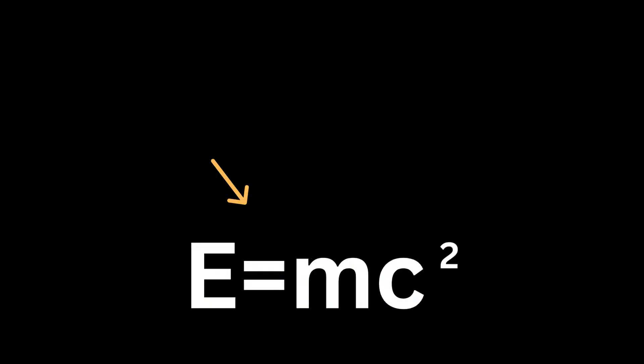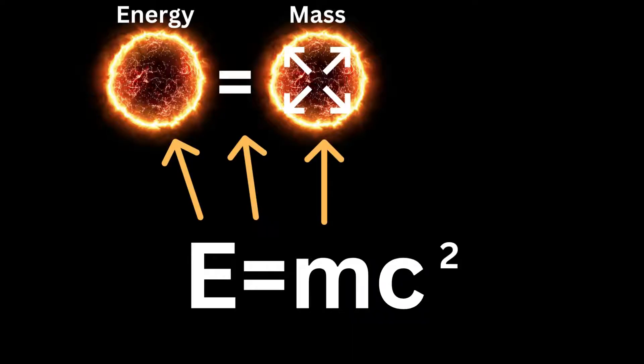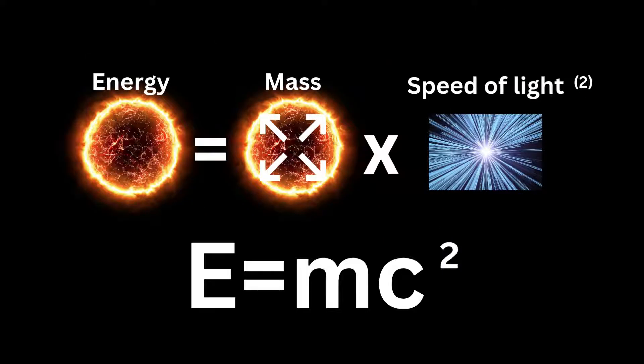So according to this formula, an object's energy is equal to its mass times the speed of light squared. What this means is as follows.